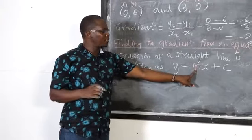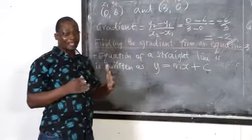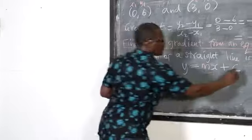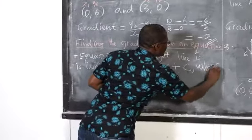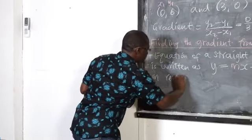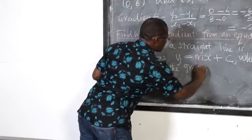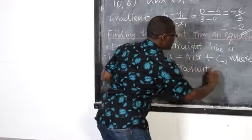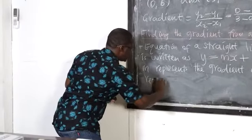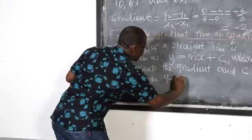Where M represents the gradient and C represents the y-intercept. When I talk of y-intercept, it is where the line crosses the y-axis. So you can also add this down: where M represents the gradient and C represents the y-intercept.